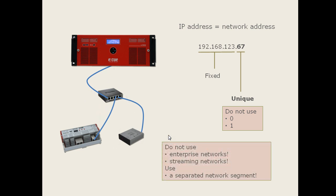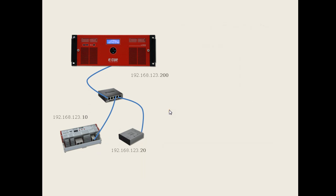You should not use enterprise networks or streaming networks with video or audio for ENET, because such networks have high data traffic which will disturb communication between the server and engines. It is best to use a separate, isolated network segment. When setup is complete, every component has a unique IP address with the same first three bytes and a unique fourth byte. If you want to add additional components later, simply connect them and assign a unique IP address — for example, 21 in this configuration.